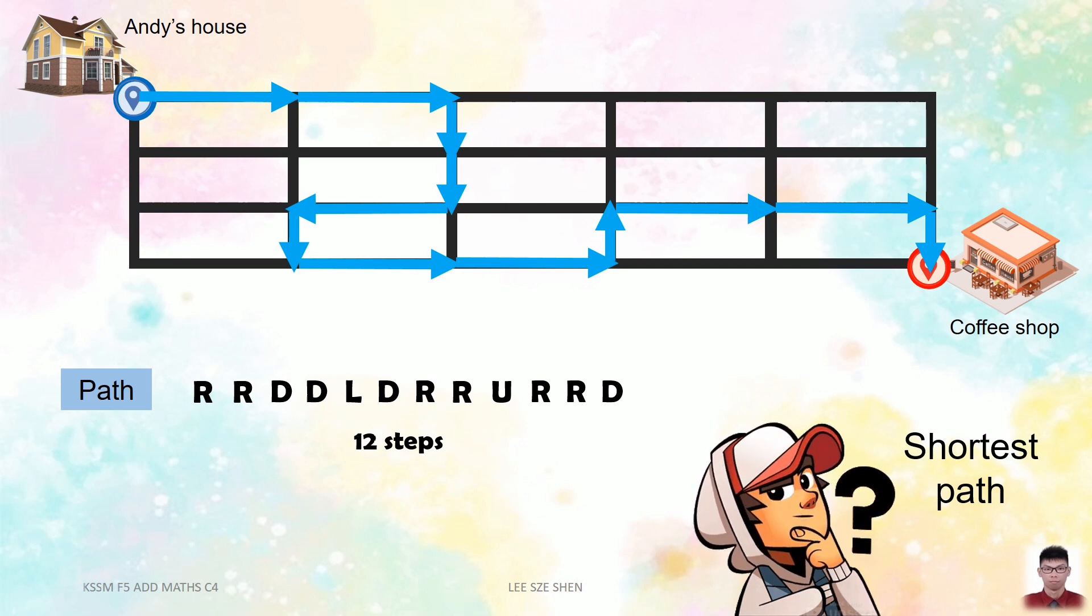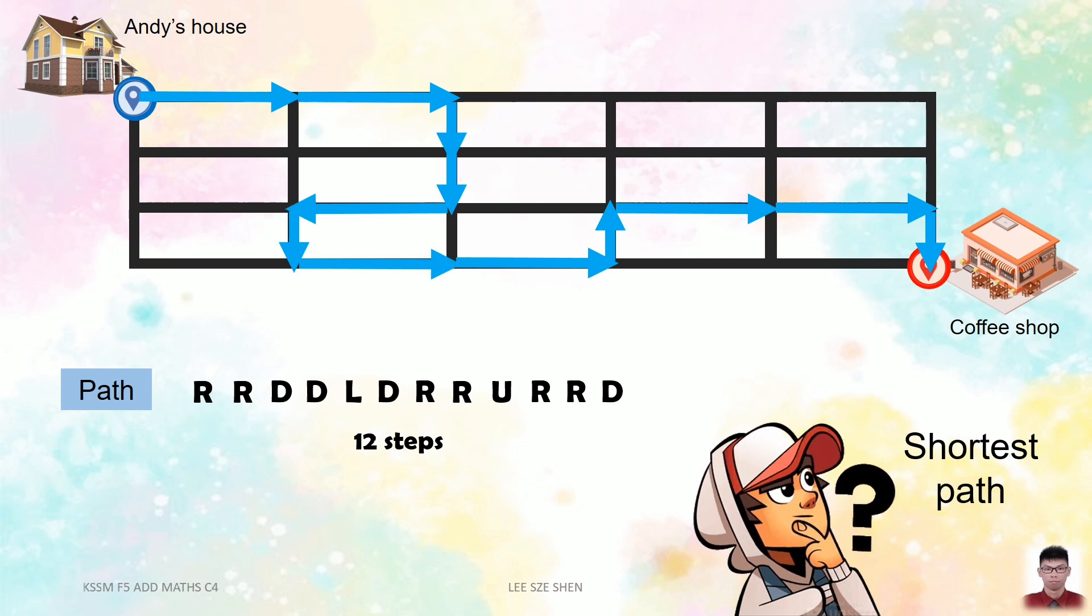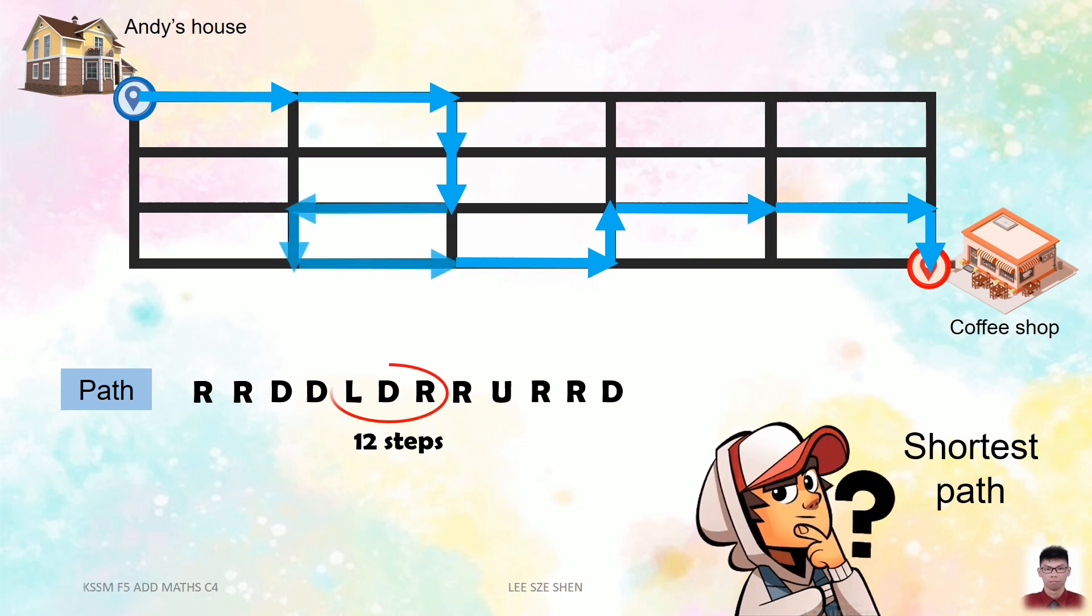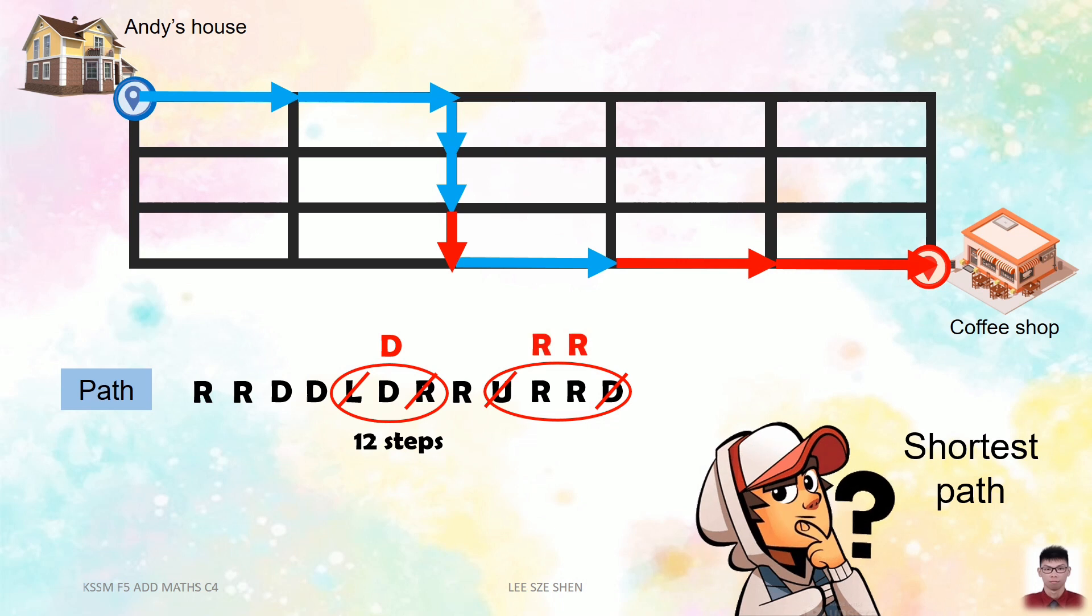Now, look at these two directions. Notice that it consists of a left direction, which is like going back to Andy's house. This causes more steps to reach the coffee shop. So we can reduce these steps into only down direction as a shortcut. Another two directions here, up and down. Same idea. Going up is more away from the coffee shop. So to save and reduce the steps, we can reduce these steps into only right, right direction. After reducing the steps, there is only 8 steps, which leads to the shortest path.